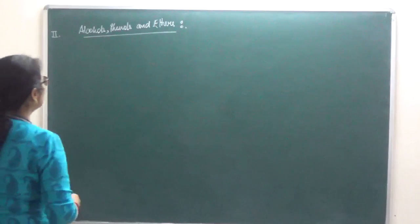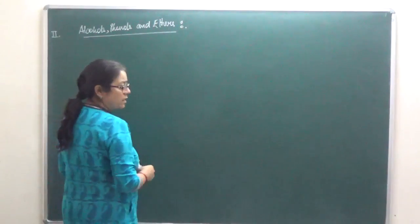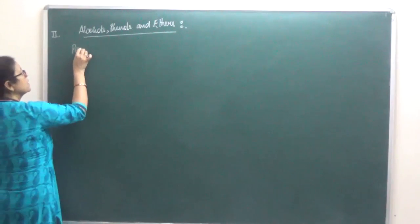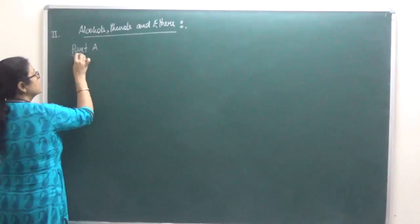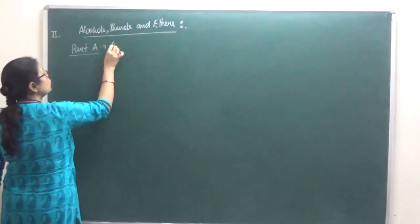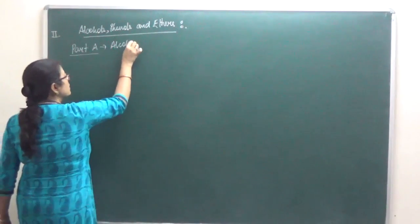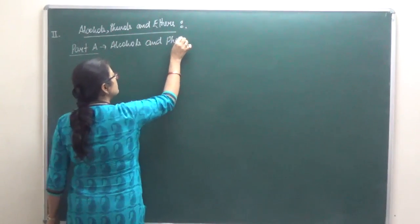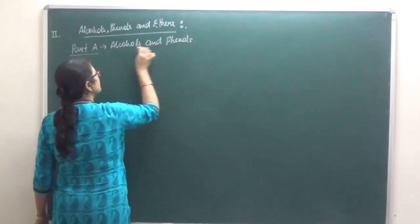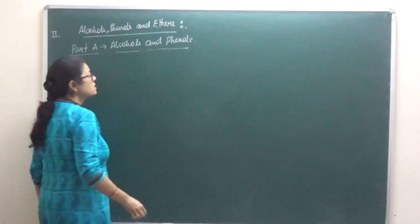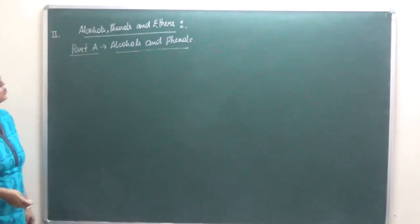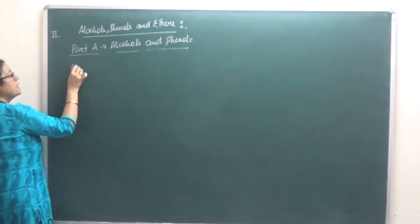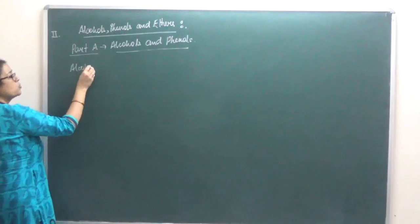In this chapter, we are going to study alcohols and phenols. In part B, we will study the ethers. When we are talking of alcohols and ethers, we say that alcohols and ethers are functional isomers of each other.